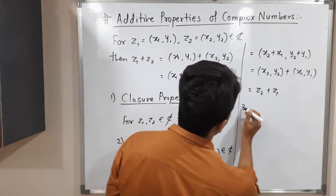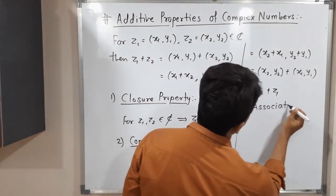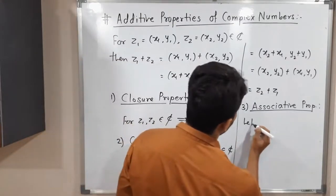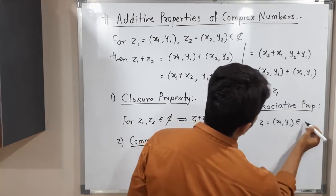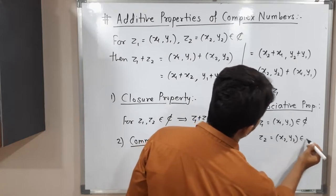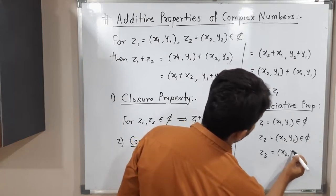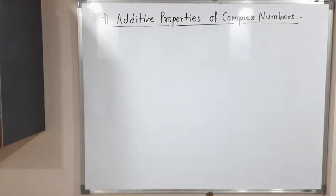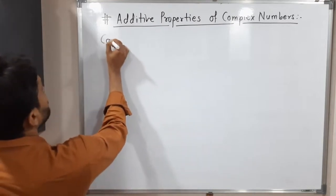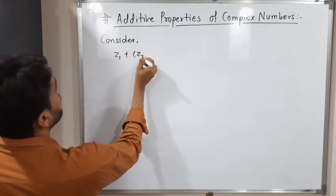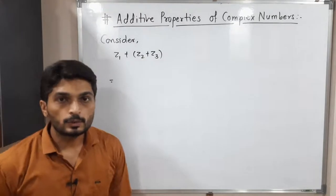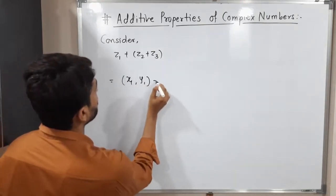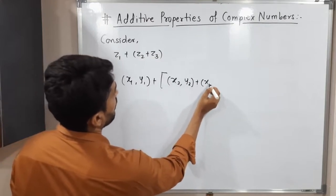The third property is the associative property. For this we need three complex numbers: Z1 = (X1, Y1), Z2 = (X2, Y2), and Z3 = (X3, Y3). Consider Z1 plus (Z2 plus Z3), substituting the values: (X1, Y1) plus [(X2, Y2) plus (X3, Y3)]. First we solve the bracket, adding the two components inside: (X2 + X3, Y2 + Y3).